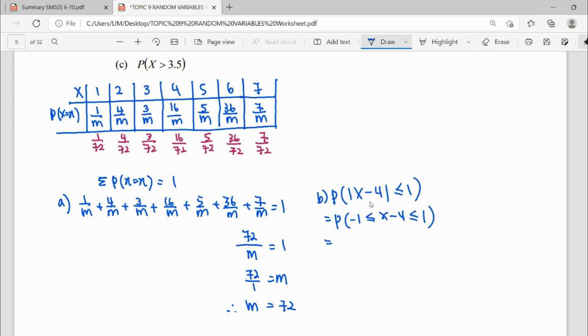So from here, we have to simplify our bracket here, our random variable first. So we're going to move this negative 4 out, so we'll be plus 4. So once it plus 4, we will give us 3, so this is give us 5. So we're going to find our probability for random variable from 3 to 5. So it will be the random variable of 3, random variable of 4, and random variable of 5. So we pick our probability here: 3 over 72, for 4, 16 over 72, for 5, 5 over 72.